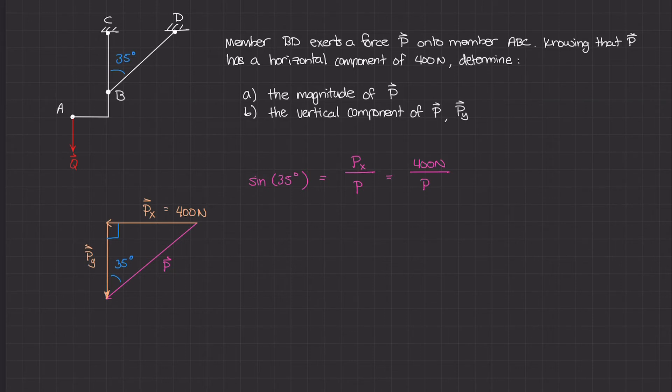I can rewrite this equation as P equals 400 newtons divided by sine of 35 degrees. I multiplied both sides by P and divided by sine of 35 to get that on the right side.